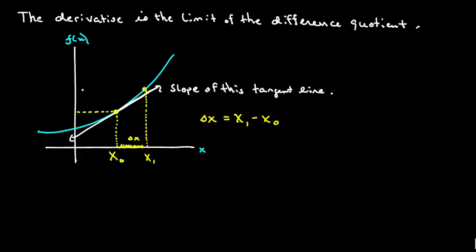Now, each of these guys also have a height value. This guy, its height is given by the function at the x value. And this guy has a height of the function at its x value. This length right here is given by f of x1 minus f at x0, and we're going to call this delta y. It's the change in the y.